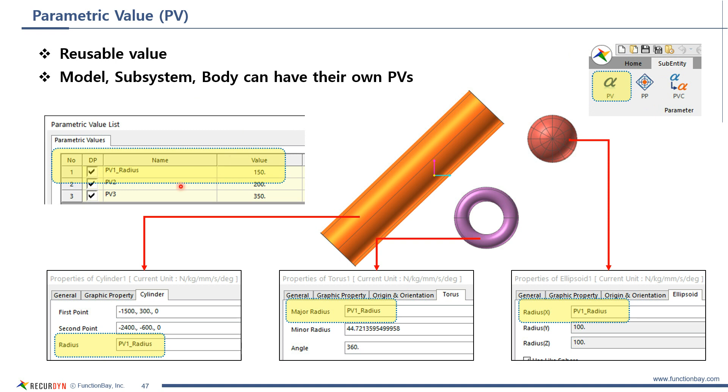For example, if pv1_radius is defined as 150, then this parametric value can be used for several parameters. Like this.